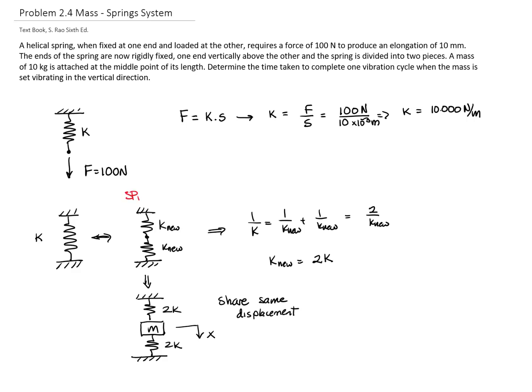And now that I have the mass in the middle, the springs are in parallel, because the displacement between the two ends of the spring is exactly the same. Therefore, the equivalent constant will be 4k.